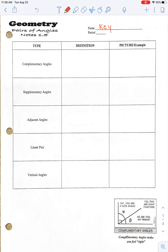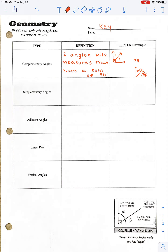The first type of angle we're talking about today is complementary angles. The definition is two angles with measures that have a sum of 90 degrees. So essentially, it's two angles that add up to 90 degrees. There are a couple of different ways you could view this. You could have angle 1 and angle 2 together forming a 90-degree angle, or they can be separate angles, like 60 degrees and 30 degrees — those two together add up to 90 degrees.